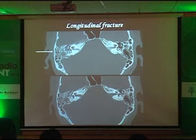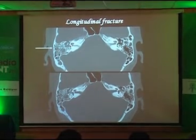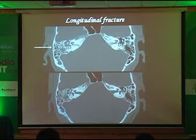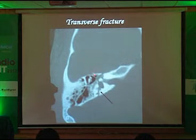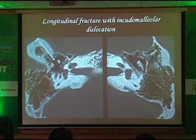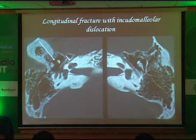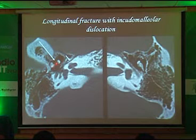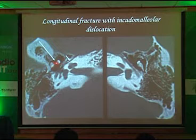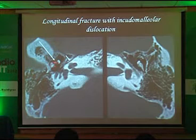Trauma: there are two types of fractures — longitudinal and transverse. If a fracture occurs along the plane of the petrous temporal bone, it is longitudinal; if perpendicular to it, it is transverse. If the fracture goes through the facial canal, it can involve the facial nerve. This patient had an incudomalleolar dislocation — classical ice cream cone on the left, with separation of the joint post-traumatically.